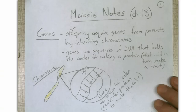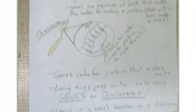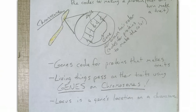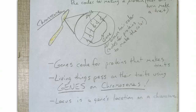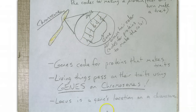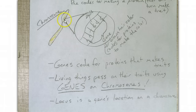Genes code for proteins that make traits. Living things pass on their traits using genes on chromosomes. How a DNA sequence makes a protein that makes a trait will be the subject of a future class. Genes are usually not just six nucleotides — there are usually thousands of nucleotides, so this is an oversimplification. The last thing to write down under genes is 'locus.' A locus is a gene's location on a chromosome. For example, if the gene for hair color is located here, the locus for the gene for hair color would be located here.